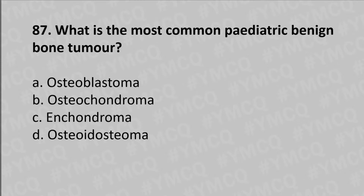Moving to our 87th question: what is the most common pediatric benign bone tumor? Option A osteoblastoma, option B osteochondroma, option C enchondroma, option D osteoid osteoma. The answer is option B, osteochondroma.